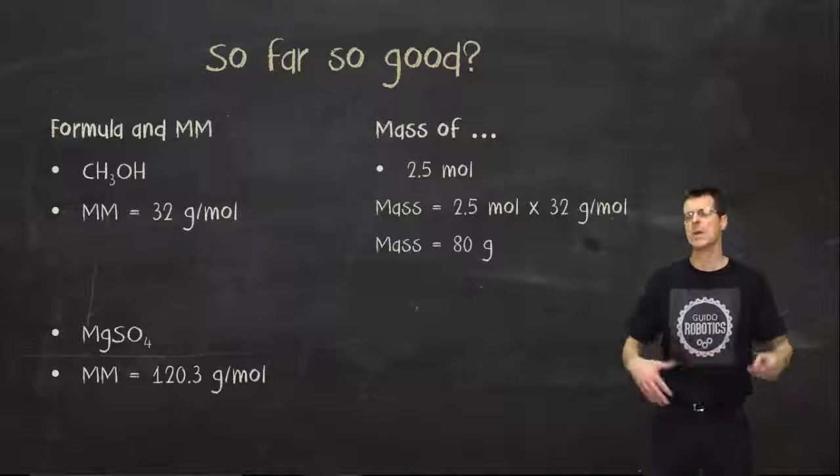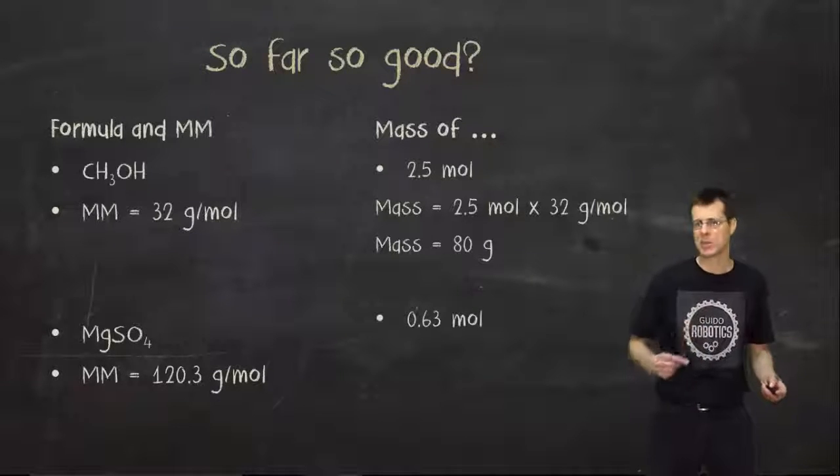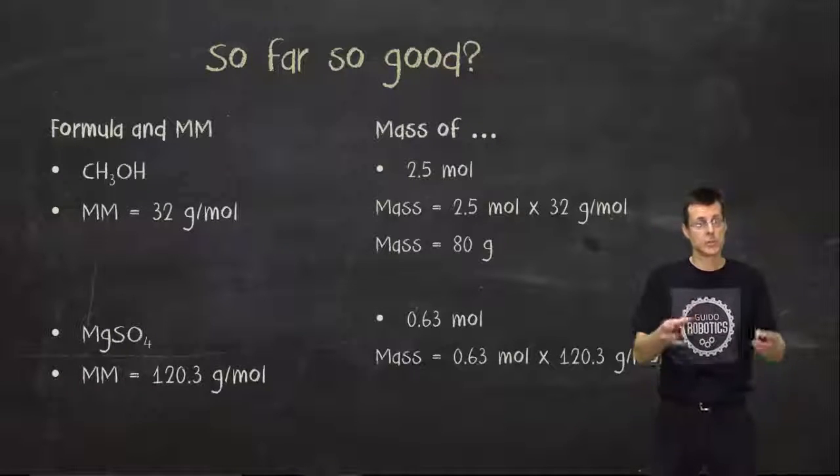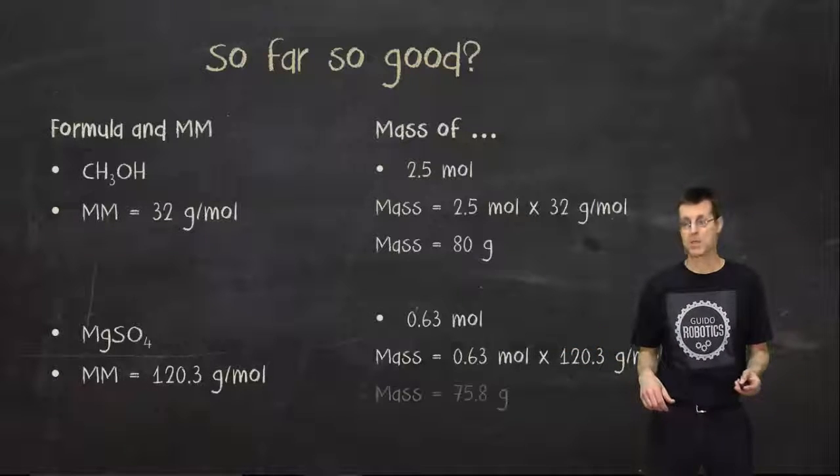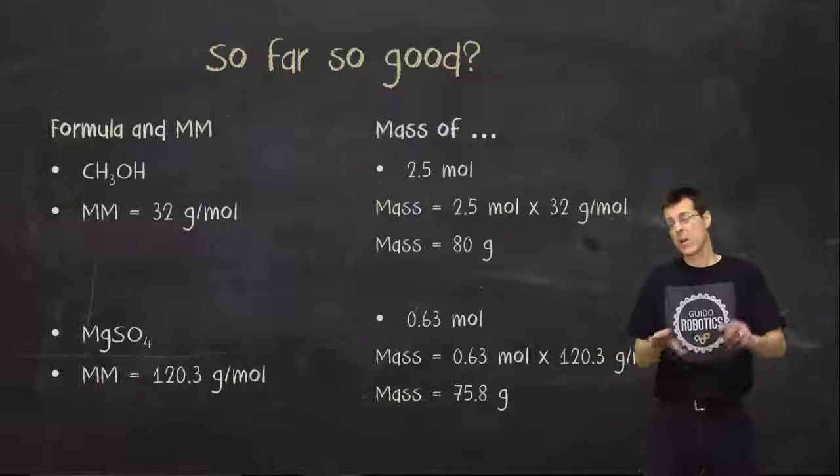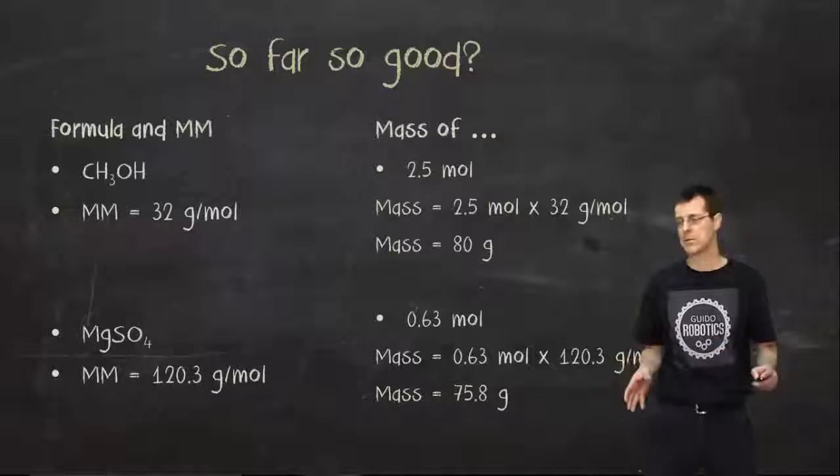What about the other one we did? We already know its molar mass, but if I had 0.63 moles, so not even one mole, how much would it weigh? I would do the same thing. How many moles do I have times the molar mass? And I would have, in this case, 75.8 grams. Now, I want to point out something. Those two masses are not too far off from each other. One's 75 and the other's 80, so within 5 grams. Well, notice that one was 2.5 moles and the other one was 0.63.